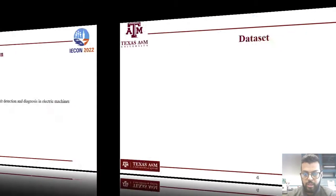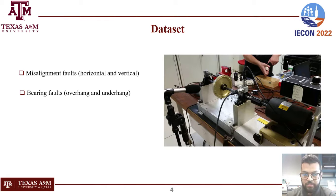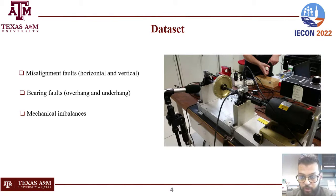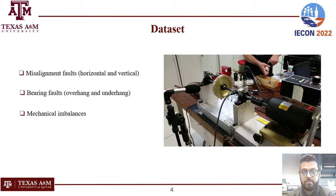The rotating mechanical states can be classified into a mechanical health state and three groups of faults: misalignment faults, bearing faults, and mechanical imbalances, which are typically monitored through vibration signals. Our dataset is extracted from the mechanism shown in this image.